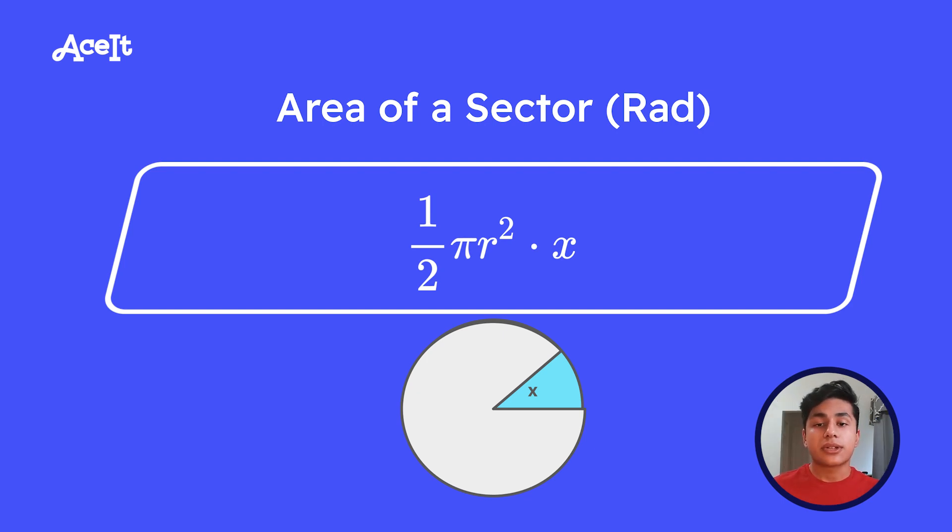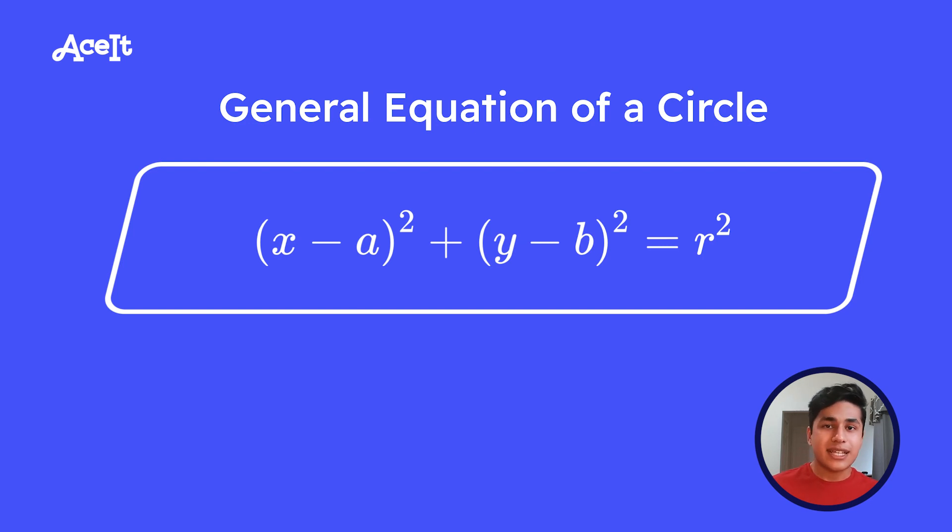The last major concept you need to know with circles is the equation of a circle. We've talked about the circumference, the area, and sectors, but we haven't talked about how to graph a circle. The general equation of a circle is (x - a)² + (y - b)² = r². You're probably wondering what the a and b refer to, and these are constants that you can use to translate the circle up and down and side to side. But remember, when you're manipulating circles, it's going to be translated in the opposite direction that you'd usually assume. If you're trying to translate left, you're going to have x plus a constant. If you're trying to go right, you're going to have x minus a constant. If you're trying to go down, you're going to have y plus a constant. And finally, if you're trying to go up, you're going to have y minus a constant.